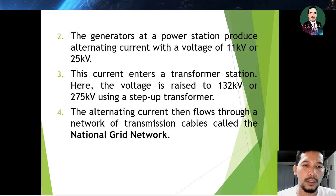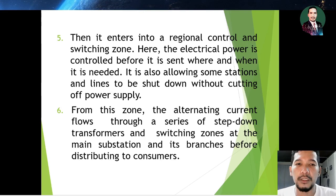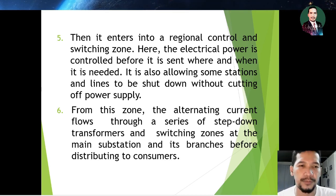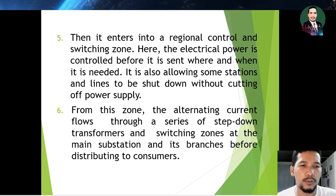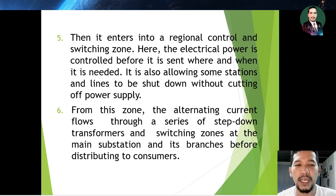The alternating current then flows through a network of transmission cables called the national grid network. It then enters a regional control and switching zone where the electrical power is controlled before it is sent where and when it is needed. This also allows some stations and lines to be shut down without cutting off the power supply. From this zone, the alternating current flows through a series of step-up transformers and switching zones at the main substation and its branches before distributing to consumers.